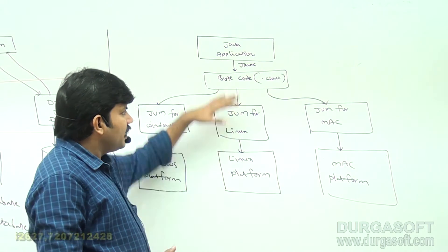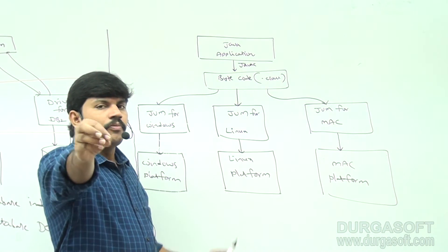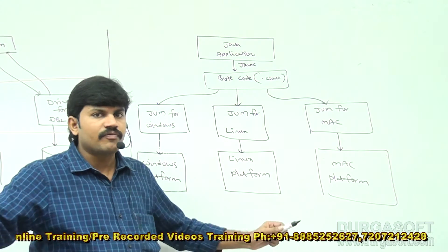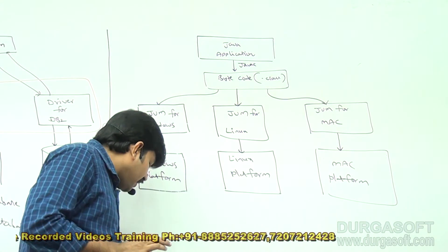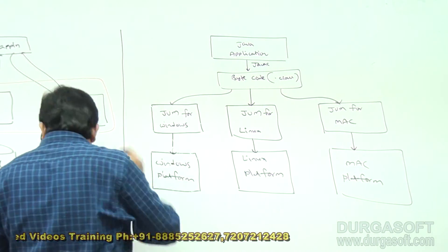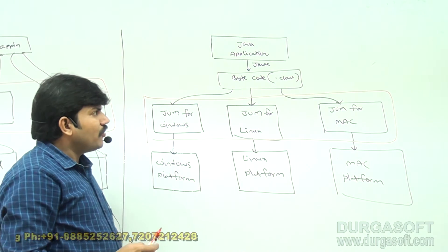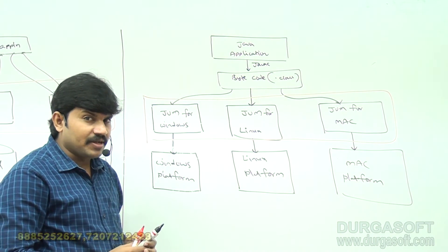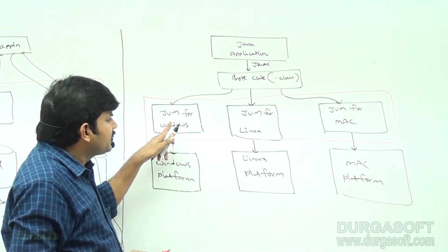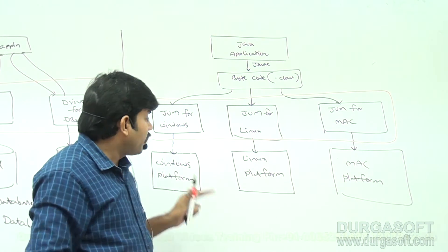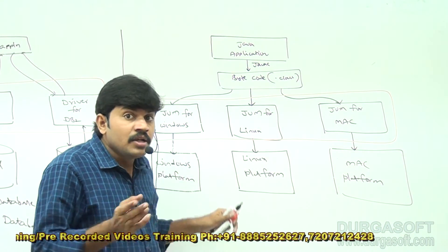How many applications are available? Only one. But how many platforms? Three. My Java application, once written, can run on any platform — this nature is nothing but platform-independent nature. How does this platform-independent nature come? Because of JVM. Java is platform-independent because three machines are there but only one program. But JVM is platform-dependent — for Windows a separate JVM, for Linux another JVM, for Mac another JVM is required.